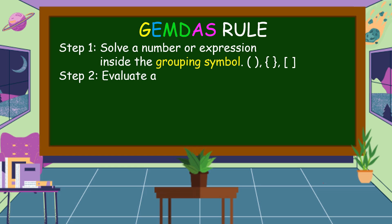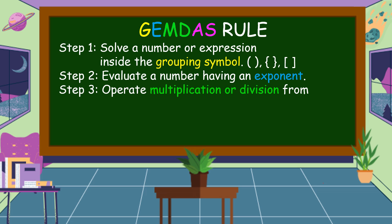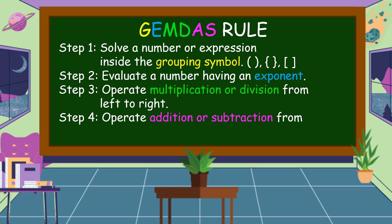Step 2: Evaluate a number having an exponent. Step 3: Operate multiplication or division from left to right. This means that multiplication and division can be interchanged — it depends upon what operation comes first from left to right. Step 4: Operate addition or subtraction from left to right. Addition and subtraction can also be interchanged, depending on what operation comes first from left to right.